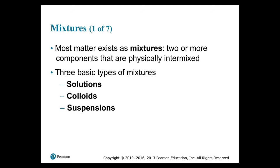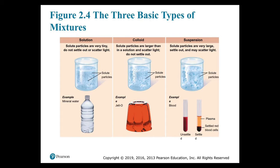Most matter exists as mixtures — two or more components that are physically intermixed. There are three basic types of mixtures: solutions, colloids, and suspensions. In a solution, solute particles are very tiny, do not settle out, and do not scatter light — an example is mineral water. In a colloid, solute particles are larger than in a solution, scatter light, and do not settle out — an example is jello. In a suspension, solute particles are very large, settle out, and may scatter light — an example is blood, which separates into plasma and settled red blood cells at the bottom.